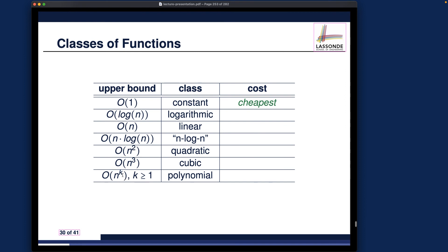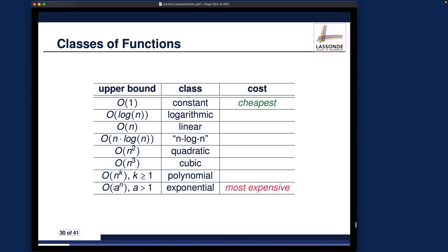Then cubic and in general polynomial — Big O of n^k — the higher the power, the more expensive the algorithm's running time. The most expensive is exponential. Of course you want to be as accurate as possible, but if the most accurate characterization of your algorithm's running time is exponential, you may want to think twice — it may be way too expensive. Usually when solving new problems, they should not reach the stage of being exponential.